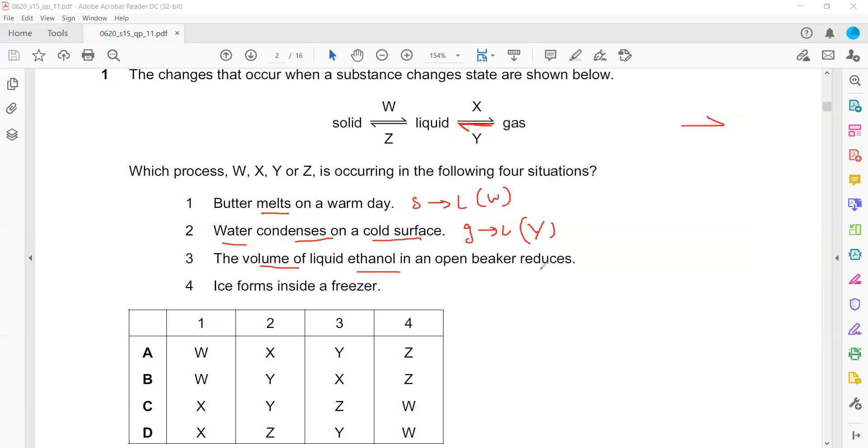The volume of liquid ethanol in an open beaker reduces. It means evaporation had happened. Evaporation means liquid turned into a gas. When liquid turned to gas, that change is X. Ice forms inside the freezer, so a liquid is turning into a solid. Liquid turned into solid is arrow Z. So it is W, X, Y, and Z. That's why B is the right answer.